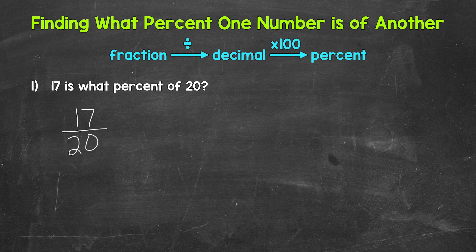Remember, fractions are a way to represent division. We divide the numerator — the top number of the fraction — by the denominator, the bottom number of the fraction. That's going to give us a decimal. We're going from a fraction to a decimal, so we need to do 17 divided by 20.